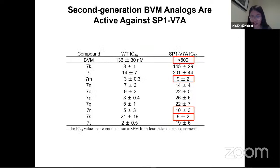These Bevirimat analogs were also active against the SP1 V7A. You can see that for Bevirimat, the IC50 value is about 500 nanomolar. If you look at 7M, 7R, as well as 7S, these compounds show potent activity that is about 50-fold more potent than Bevirimat itself.